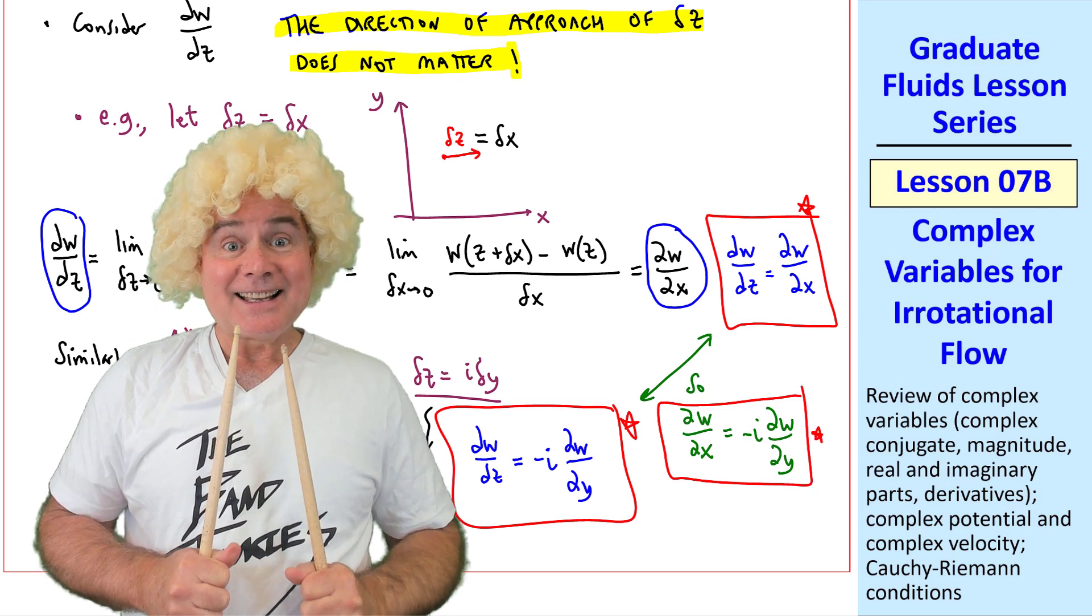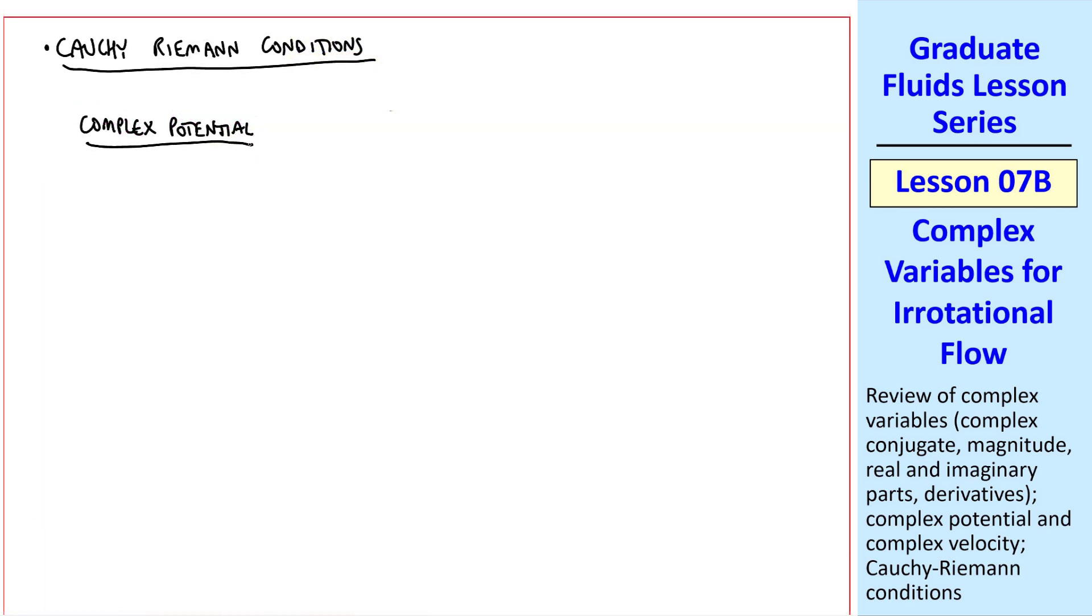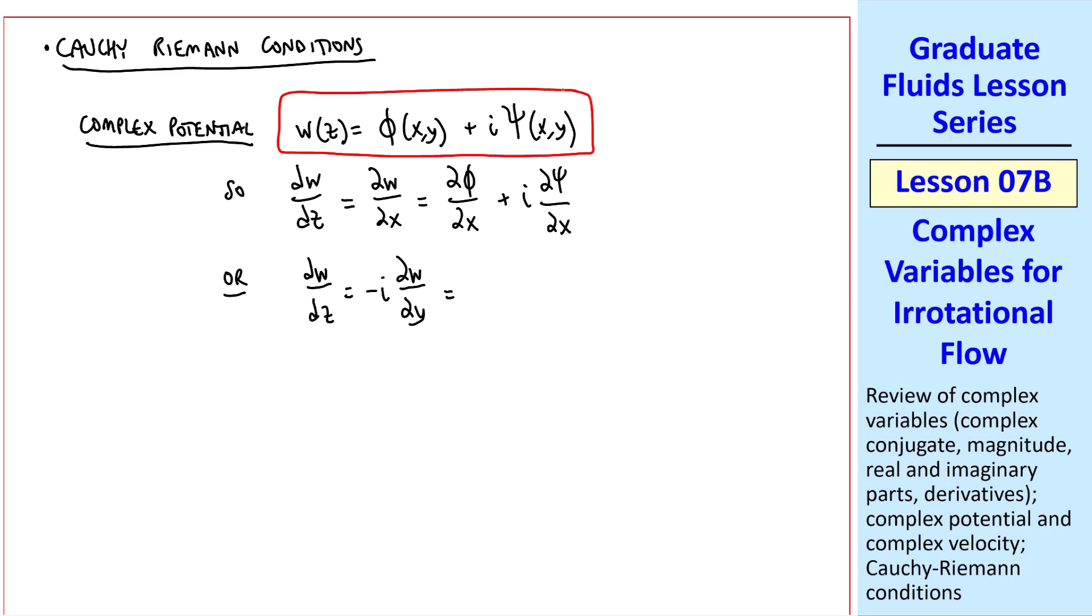Yes, it's a little confusing, but that's where the Cauchy-Riemann conditions come in. We define the complex potential as w of z is phi of xy plus i psi of xy. So taking the derivative, dw dz, as we just showed, is del w del x, which would be del phi del x plus i del psi del x. Or, dw dz is minus i del w del y, which again from our expression for w is minus i del phi del y minus i times i del psi del y.